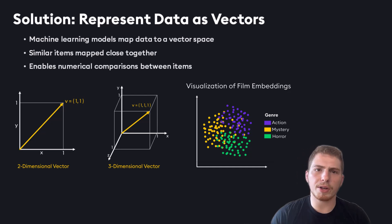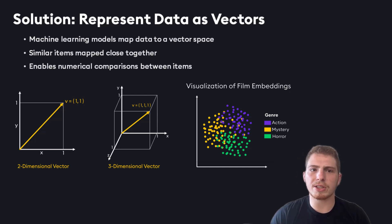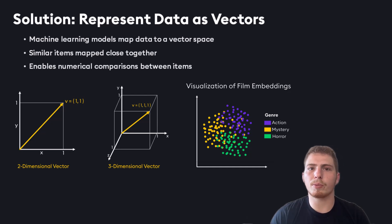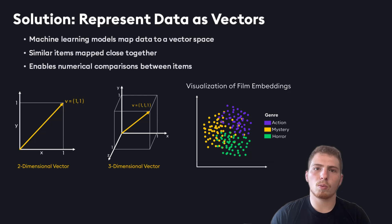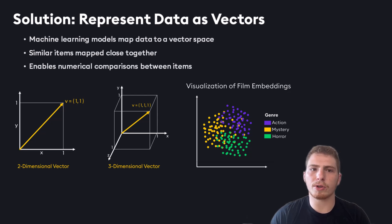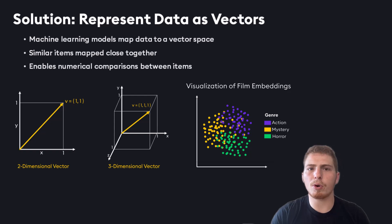On the right, you see a visualization of film embeddings. This is based on taking a bunch of plot summaries, embedding them, and then mapping them to multidimensional space. When you map them by genre, similar items will be close to each other, and this pattern is even more profound at higher dimensions.